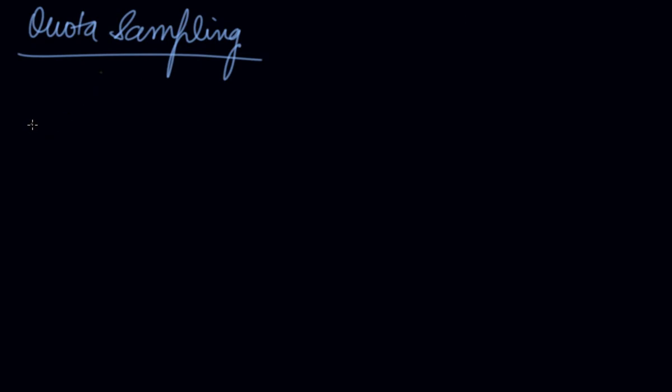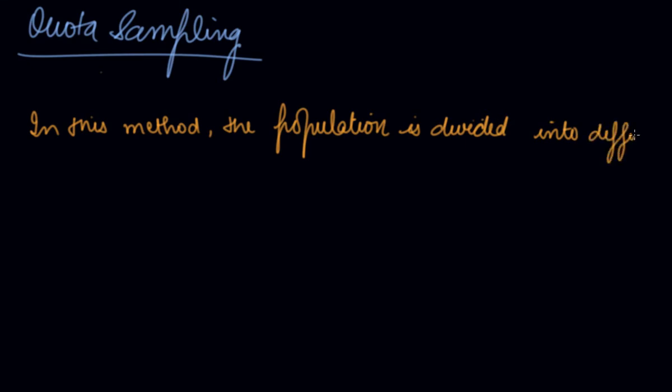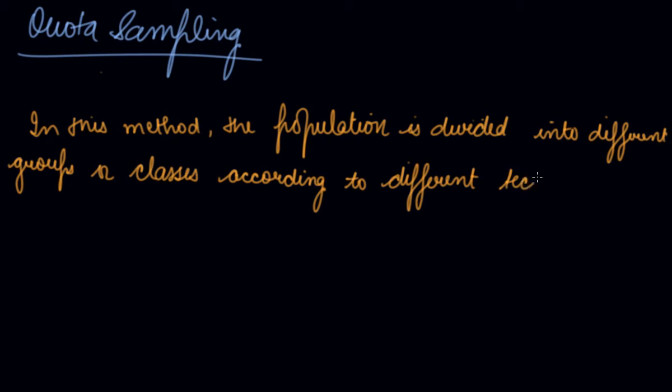Next comes quota sampling. In this method, the population is divided into different groups or classes, according to different techniques or characteristics of the population.